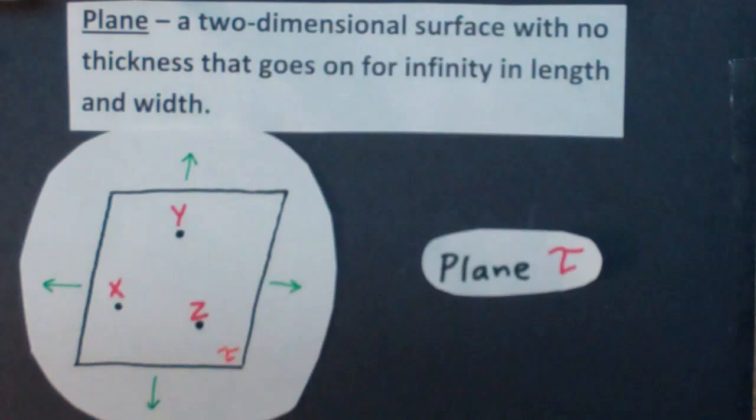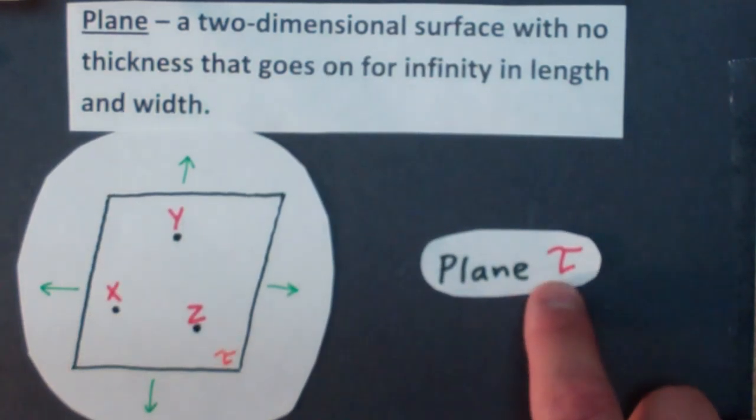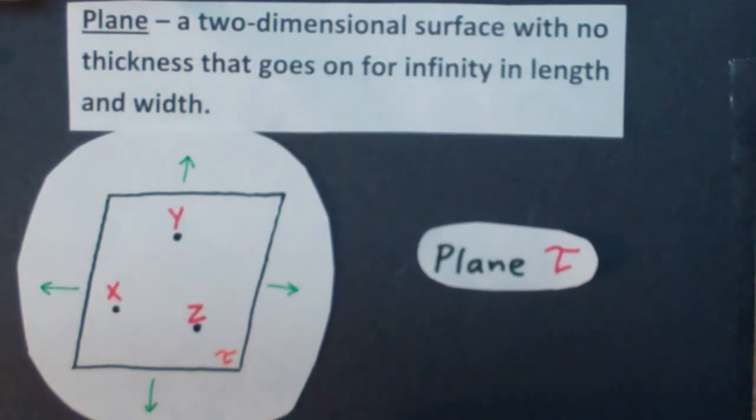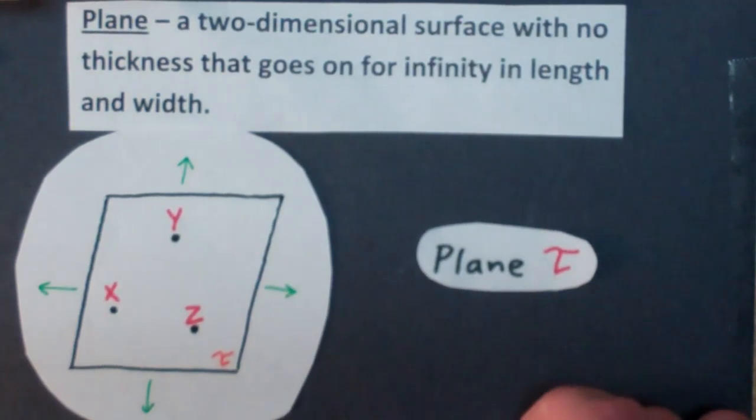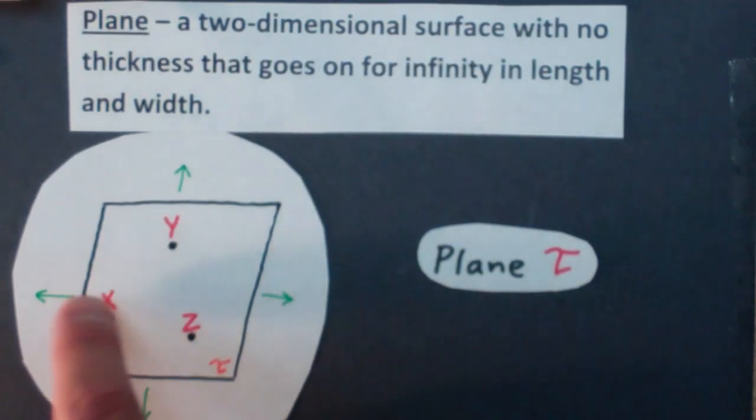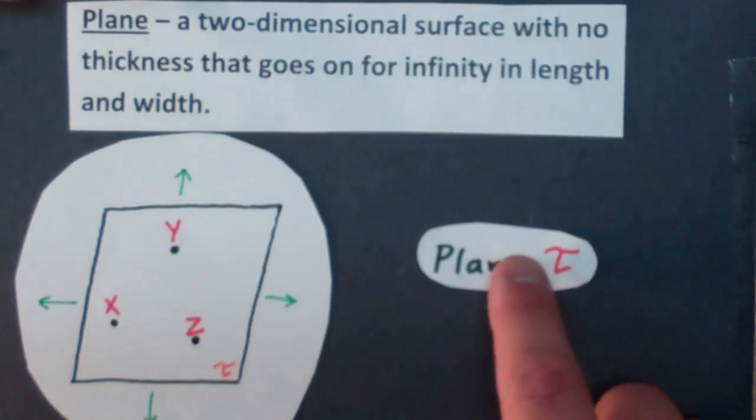Now there's another way of naming a plane, and you'll see this sometimes, is if I have an uppercase capital letter in cursive in one of the corners of the plane, then I can name it that uppercase capital letter. So I have an uppercase cursive T here. So you can name it using three points, or you can name it using the uppercase capital cursive letter to name the plane.